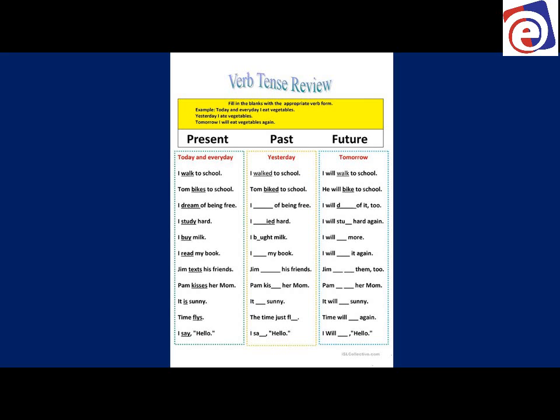'Walked,' 'biked' — both of those ED words have the T sound at the end. 'I dream of being free. I dreamed of being free.' 'Dreamed' is D-R-E-A-M-E-D, but this time the D sounds like a D. 'I will dream of it again.' This is why it's important to listen to a native English speaker — you'll catch the difference.